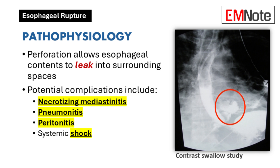When the esophagus ruptures, its contents leak into nearby areas such as the mediastinum, pleural cavity, and peritoneal space. This leakage sets off a series of severe complications. These may include necrotizing mediastinitis — an aggressive inflammation of the mediastinal area — pneumonitis, which affects the lungs, and peritonitis, involving the peritoneal cavity. In the most severe cases, systemic shock can occur, threatening the patient's overall stability.